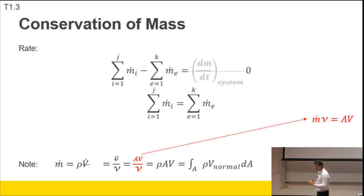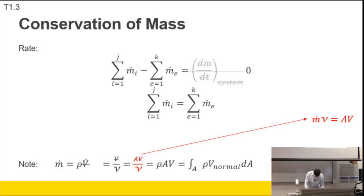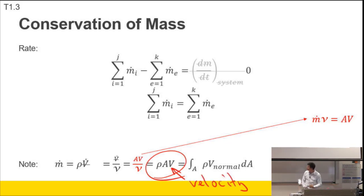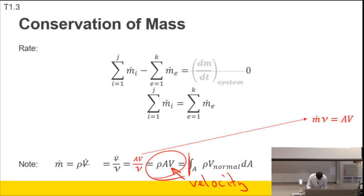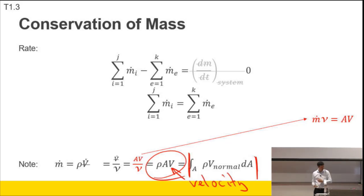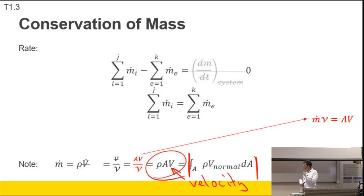For those who've done a fluids course: strictly, the velocity in the equation should be an integral across the area of the normal velocity component times density, since fluid flows slower near the walls and faster at the centre of the pipe. For a compressible fluid, density is inside the integral. Units of mass flow rate are kilograms per second.